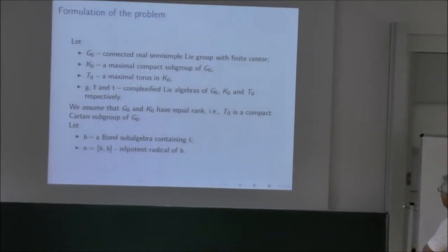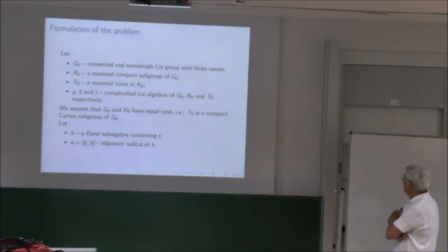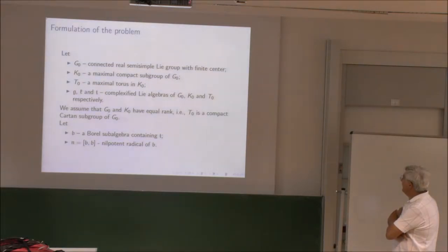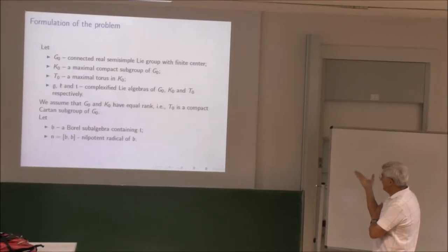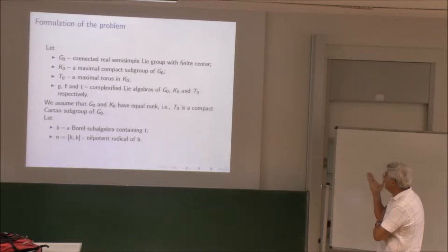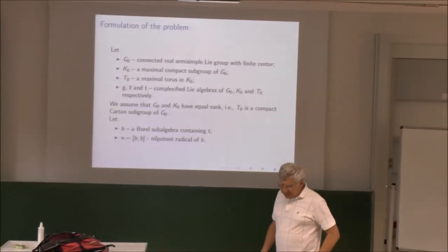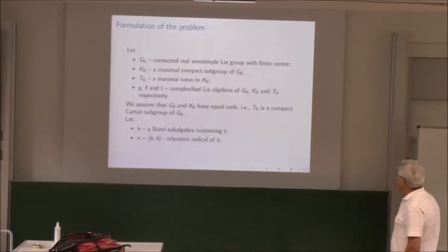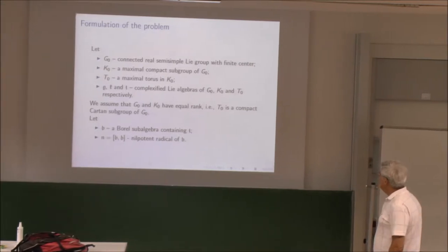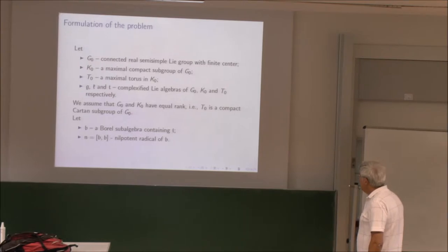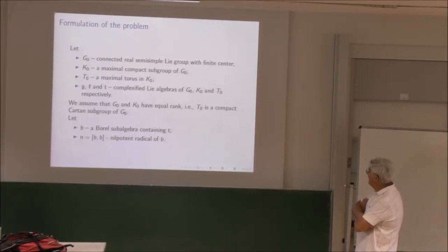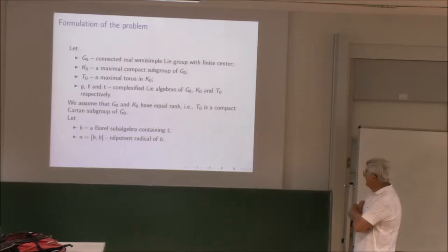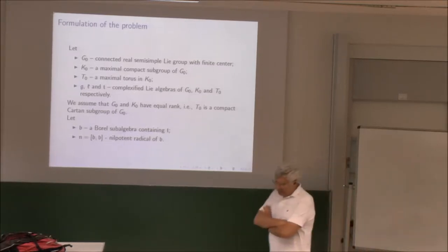The equal rank assumption means, as was clear from Wilfred's lecture, that K-naught is the compact part of G-naught. Under these conditions the group G-naught has a discrete series, which appeared very explicitly in Wilfred's lectures in the case of SU(1,1). Then I will denote by B a Borel subalgebra containing the Lie algebra P of P-naught, and N is the nilpotent radical of this Borel.